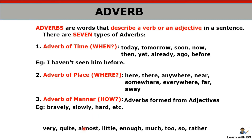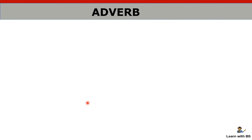Some words like 'very', 'almost', 'little', 'enough', 'much', 'too' are also used before verbs as degree adverbs. So these are the types of adverbs — there are seven types in total: adverb of time, adverb of place, adverb of manner.